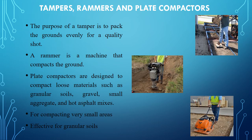Tampers, rammers, and plate compactors are types of impact or vibratory equipment. Tampers are examples of impact-providing equipment; rammers can be either impact or vibratory in nature, while plate compactors are usually vibratory in nature.